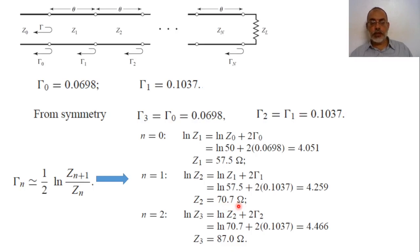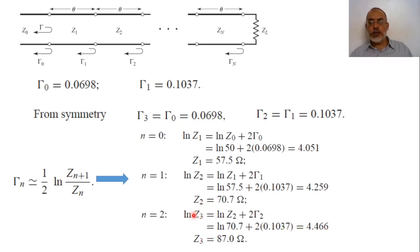The third transmission line section: γ_2 = (1/2)·ln(Z_3/Z_2). We have Z_2, so ln(Z_3) = ln(Z_2) + 2γ_2, where γ_2 = γ_1 = 0.1037. So ln(70.7) + 2·(0.1037) = 4.466, and Z_3 = e^{4.466} = 87.0 ohms.